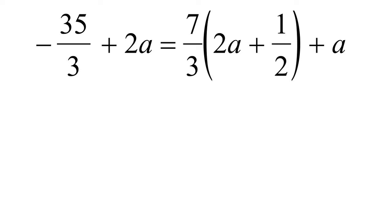So you might be looking at this and thinking, where do I start? What I would say is let's get rid of those brackets. So what we're going to have here is minus 35 over 3 — we're not going to touch that, and we're not going to touch the 2a. Here's how this multiplies in, because some learners get a bit confused.